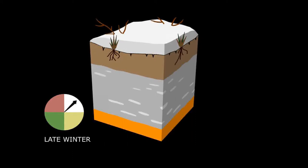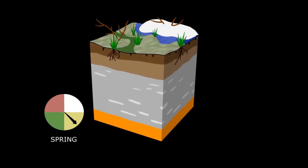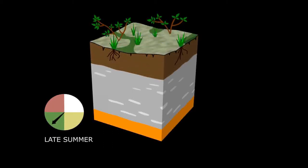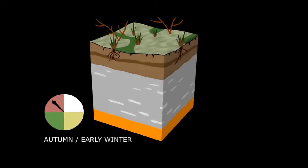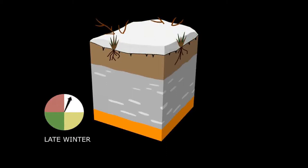The spring thaw, the high summer with a totally thawed active layer, autumn and winter again when freezing of the active layer takes place again, and so on.